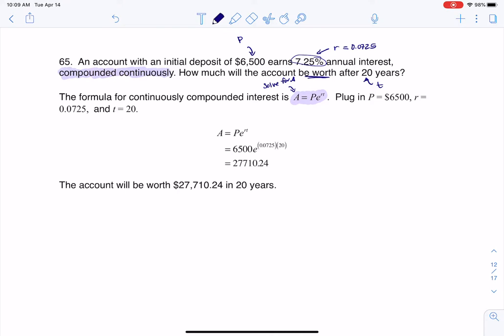So I've got 6,500. And again, because it's compounded continuously, the base for our power is E. And then my exponent is R times T, which is 0.0725 times 20. And there's that number that comes out from our calculator.